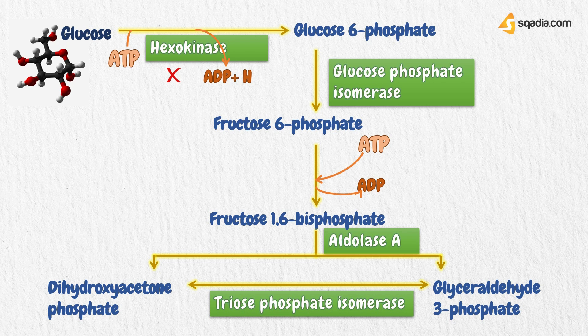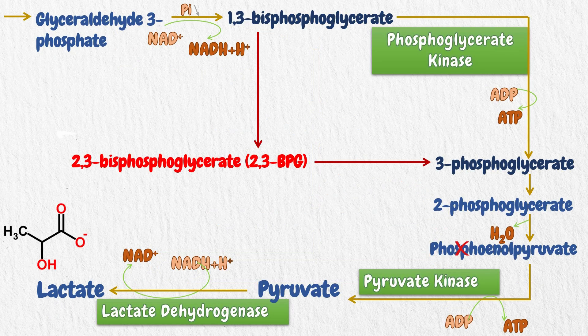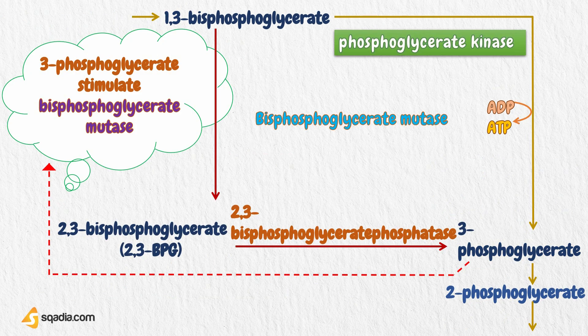The effect on 2,3-BPG metabolism varies according to the type of enzyme affected and its position in the glycolytic pathway. If the enzyme is proximal to the 2,3-BPG shunt — for example, deficiency of hexokinase, glucose phosphate isomerase, or aldolase A — the flow of metabolites through glycolysis will decrease and consequently the concentration of 2,3-BPG will fall. If the enzyme is distal to the shunt — for example, pyruvate kinase deficiency — the concentration of 2,3-BPG will rise. Additionally, patients with deficiency of the bifunctional shunt enzyme BPG mutase or 2,3-BPG phosphatase have been reported to have low concentrations of 2,3-BPG.